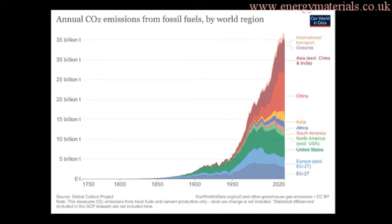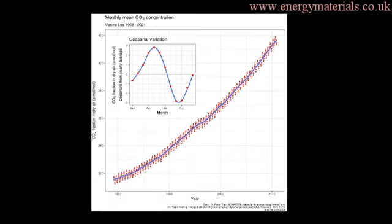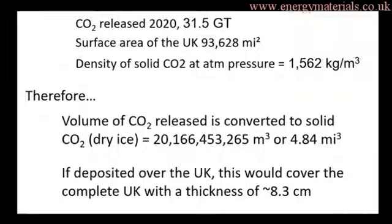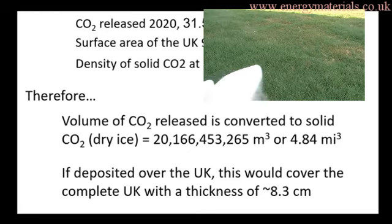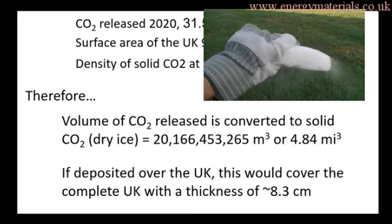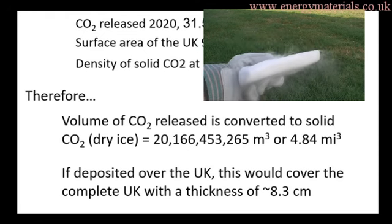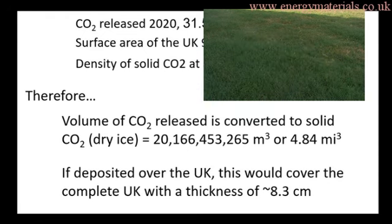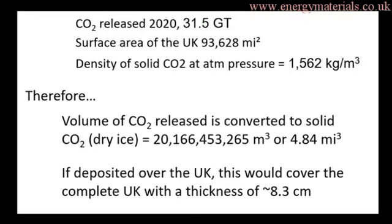There is a correlation between the amount of CO2 in the atmosphere and global temperature — as the amount of CO2 increases, so does temperature. To put the 31.5 gigatons of CO2 released in 2020 into perspective: if we turn this CO2 into a sheet of dry ice, that sheet would have a thickness of 8.3 cm over the entire land surface area of the United Kingdom. Imagine that accumulating year upon year — this is a significant amount of CO2.